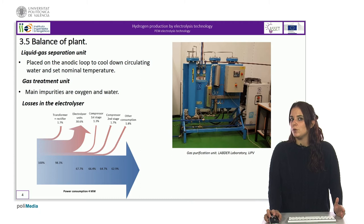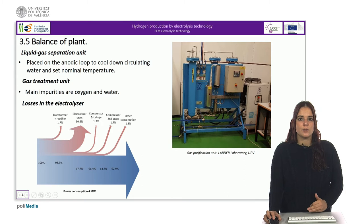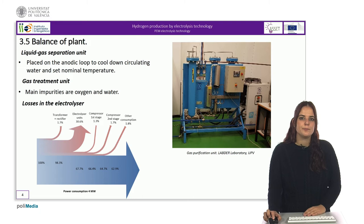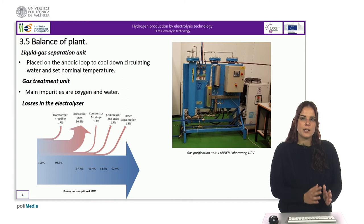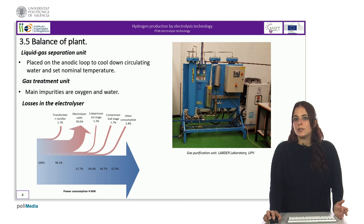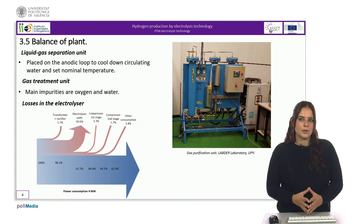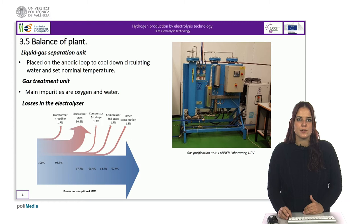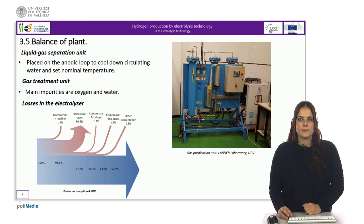Here we have in detail the liquid-gas separation unit and the purification unit. The liquid-gas separation unit is placed on the anodic loop, as well as a heat exchanger to cool down circulating water and set the nominal operating temperature. These units are placed at the exit of both the cathode and the anode. The electroosmosis flow of water collected on the cathode side is transferred back to the anode at regular time intervals or sent back to the water treatment unit. For the gas treatment unit, hydrogen purification is usually included in the PIM water electrolysis plant; the level of gas purity is a function of the application and customer specification. The main impurities are oxygen and water. Oxygen can be eliminated by passive catalytic recombination, while water can be eliminated by using a chiller of appropriate capacity and/or by temperature swing absorption.